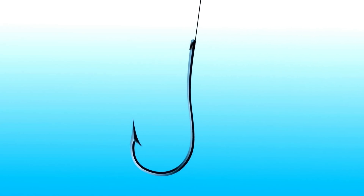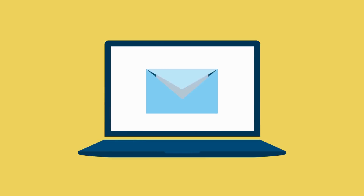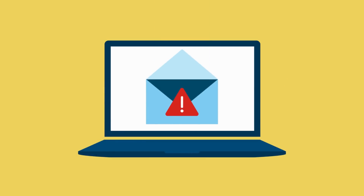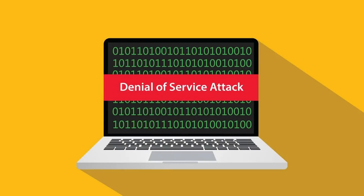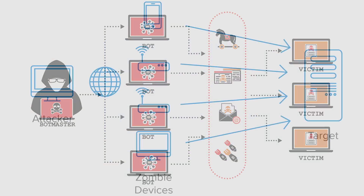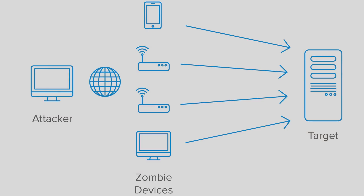In a phishing attack, attackers use deceptive emails, messages or websites to trick users into providing sensitive information like passwords, credit card details or personal information. On third number we have denial of service (DoS) and distributed denial of service (DDoS) attacks. These attacks aim to overwhelm a system or network with a flood of requests, rendering it inaccessible to legitimate users.